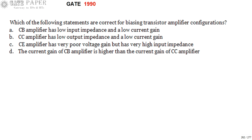Option A: Common base has low input impedance and low current gain. Option B: Common collector has low output impedance and low current gain. Option C: Common emitter amplifier has very poor voltage gain but has very high input impedance. Option D: Current gain of common base amplifier is higher than current gain of common collector.